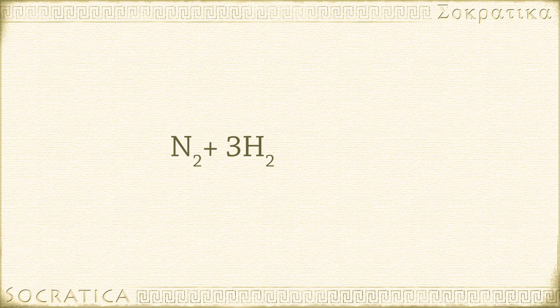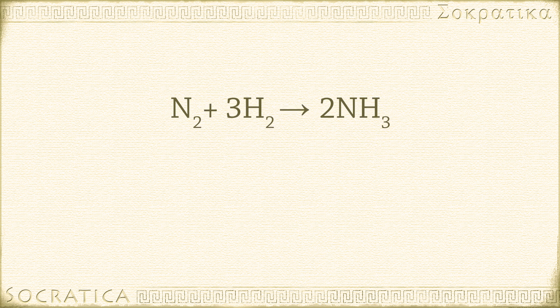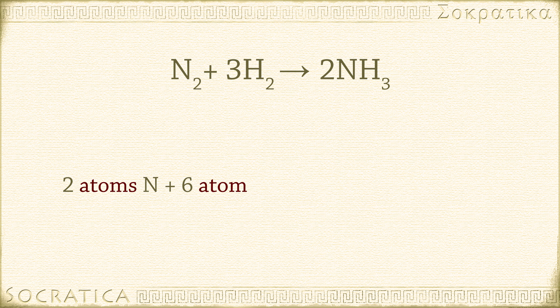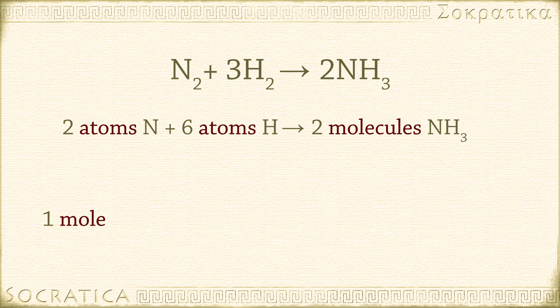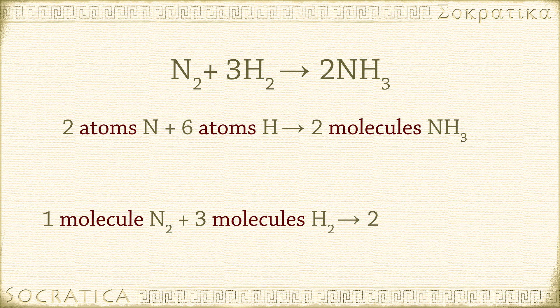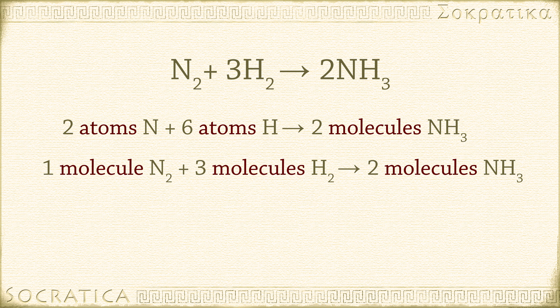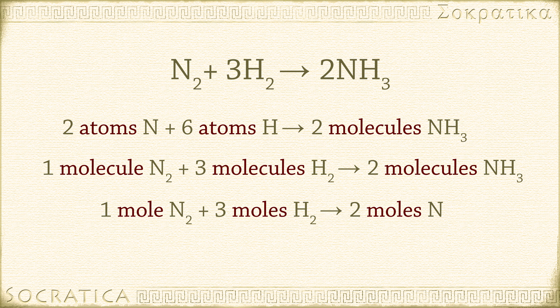When you see the equation N2 + 3H2 → 2NH3, it's the same as saying it takes two atoms of nitrogen plus six atoms of hydrogen to make two molecules of NH3. The equation also says one molecule of N2 plus three molecules of H2 produces two molecules of NH3. Another way to read it is one mole of N2 plus three moles of H2 yields two moles of NH3.